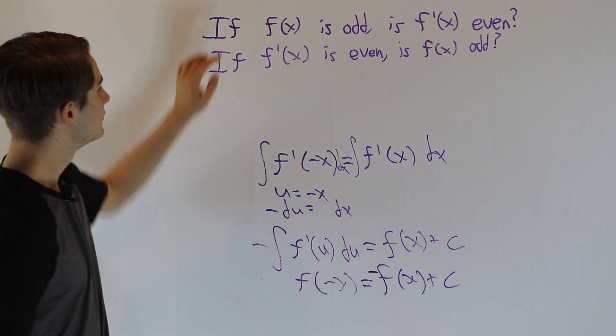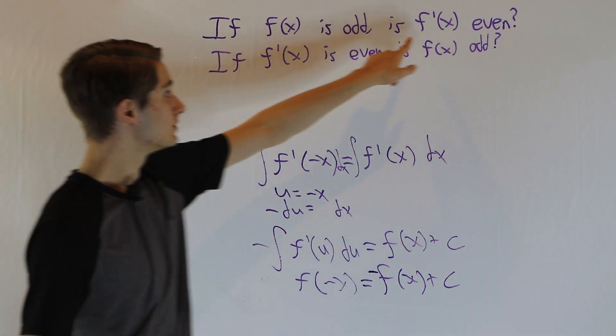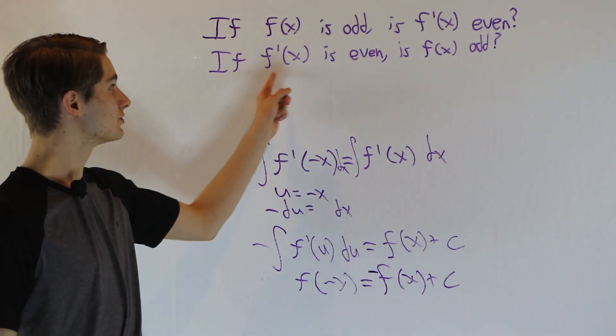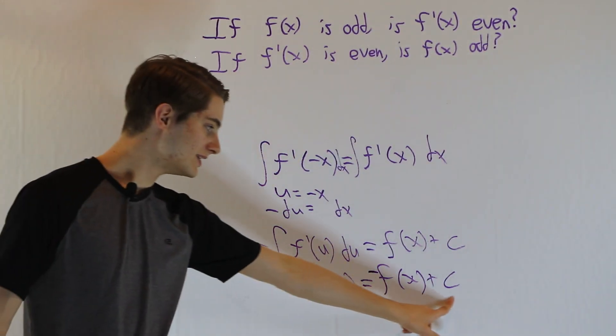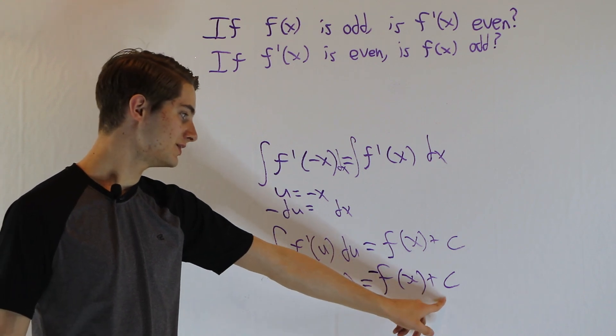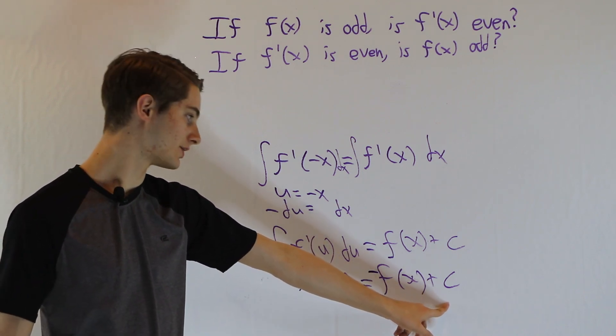So what we have is that if a function is odd, its derivative is even. But if its derivative is even, it is not necessarily odd because when we take the integral, we always have to add a constant.